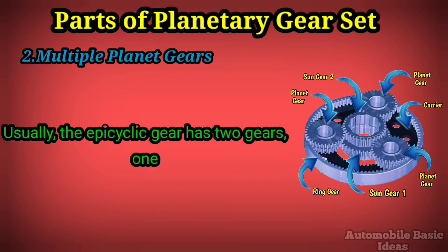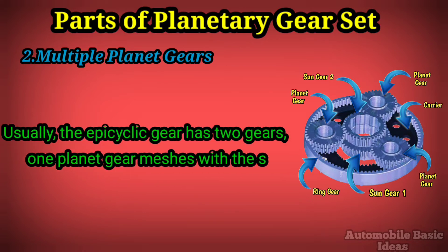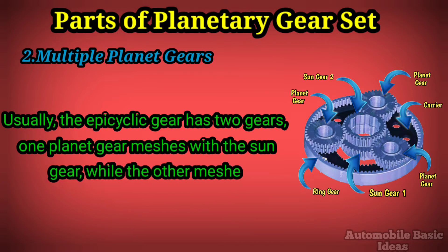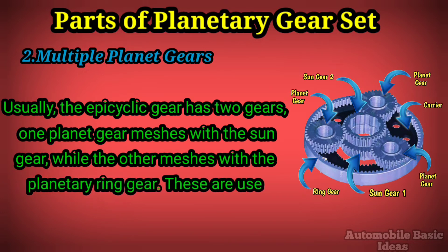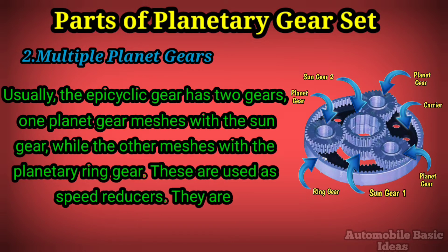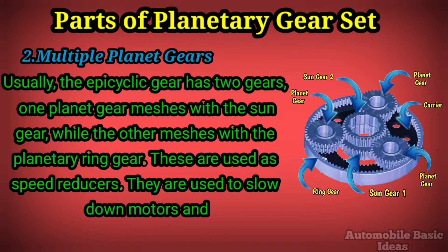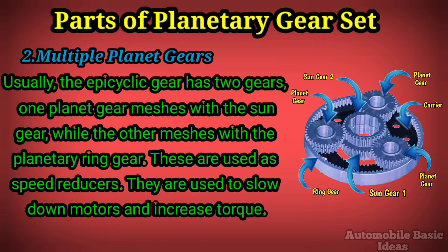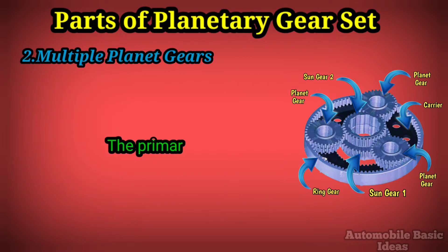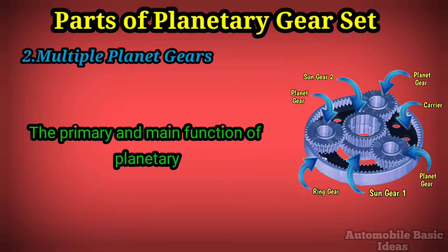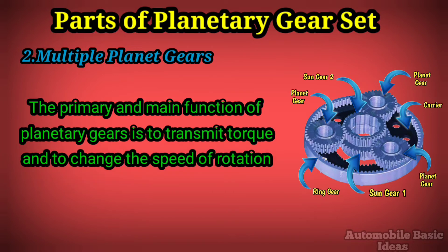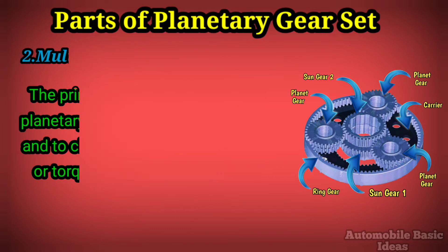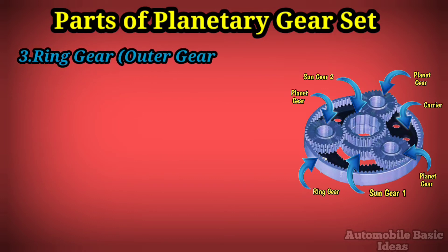Two: Multiple planet gears. Usually the epicyclic gear has two gears — one planet gear meshes with the sun gear while the other meshes with the planetary ring gear. These are used as speed reducers to slow down motors and increase torque. The primary function of planetary gears is to transmit torque and to change the speed of rotation or torque between the input and output shaft.